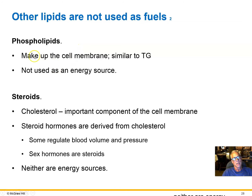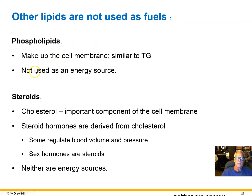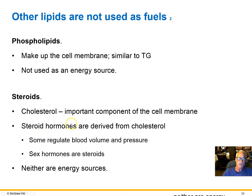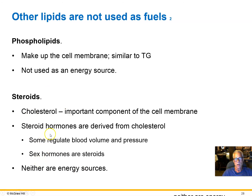There are other lipids prevalent in our body, but they are not sources of energy. Phospholipids — similar to triglycerides or diglycerides — make up the cell membrane, the phospholipid bilayer. Steroids are multicyclic carbon ring structures, one of which is cholesterol, an important component of all cell membranes. Steroid hormones derived from cholesterol — including testosterone, estrogen, and progesterones — control blood volume, blood pressure, secondary sex characteristics, muscle mass, and bone density, but these are not energy sources.